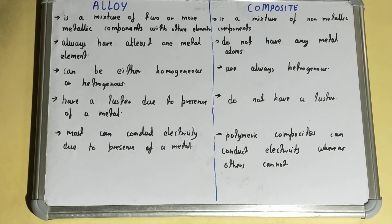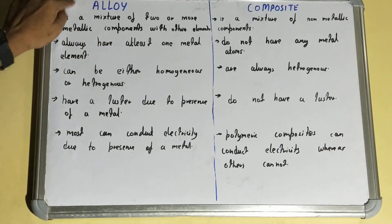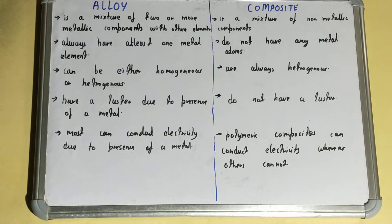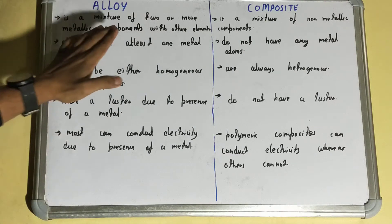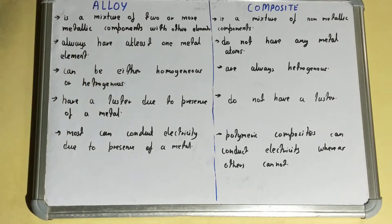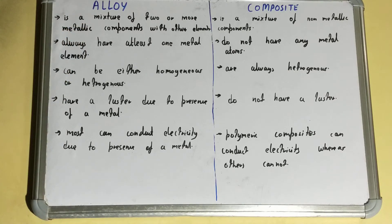In this video I'll be explaining the difference between alloy and composite. If we talk about the alloy, then alloy is a mixture of two or more metallic components with other elements. When two or more metallic components are mixed with other elements, they form an alloy.